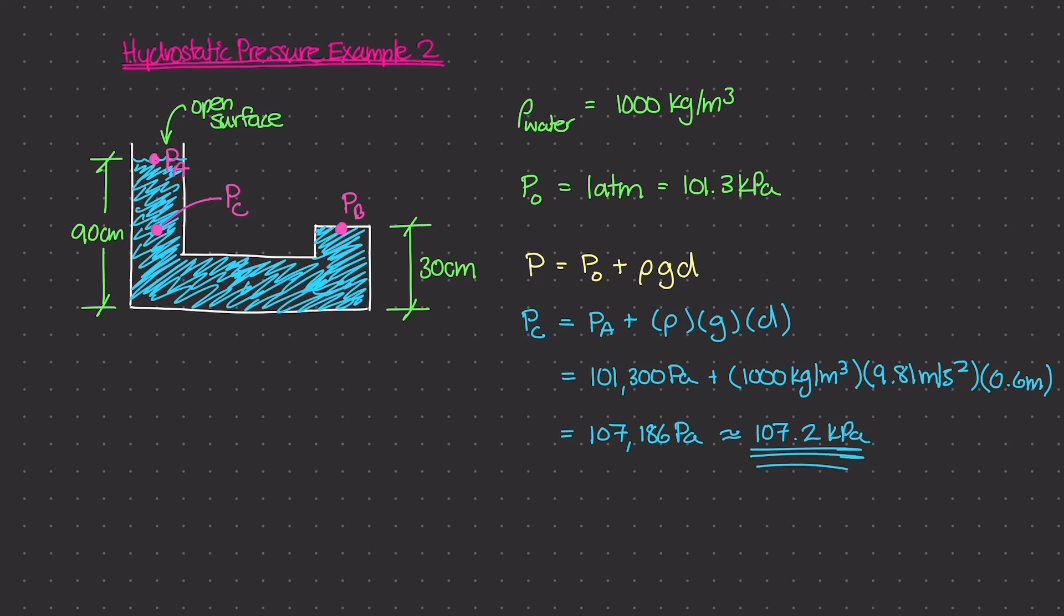Great, so this right here is the pressure at point C. And remember, this liquid is in hydrostatic equilibrium, so the pressure at all points along a horizontal line are going to be the same. So really, pressure C is equal to pressure B, and that means at pressure B at the capped surface, the pressure is 107.2 kilopascals.